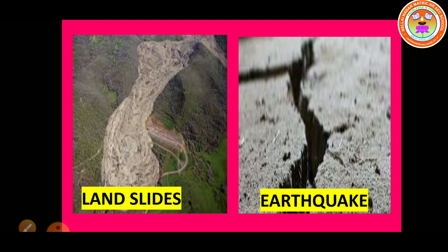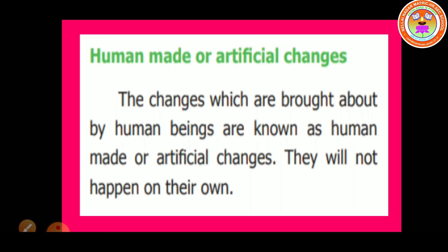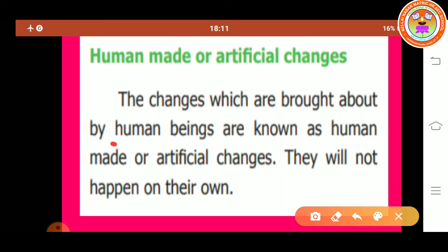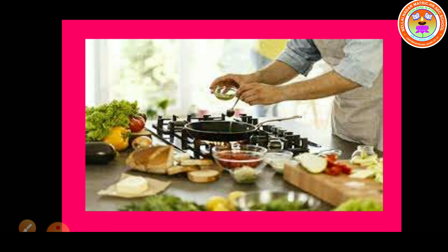These changes take place in nature on their own and are not controlled by human beings, so these changes are called natural changes. Next one is human-made or artificial changes. The changes which are brought about by human beings are known as human-made or artificial changes. They will not happen on their own. For example, construction of buildings, cultivating crops, cooking. These are the examples of human-made change.